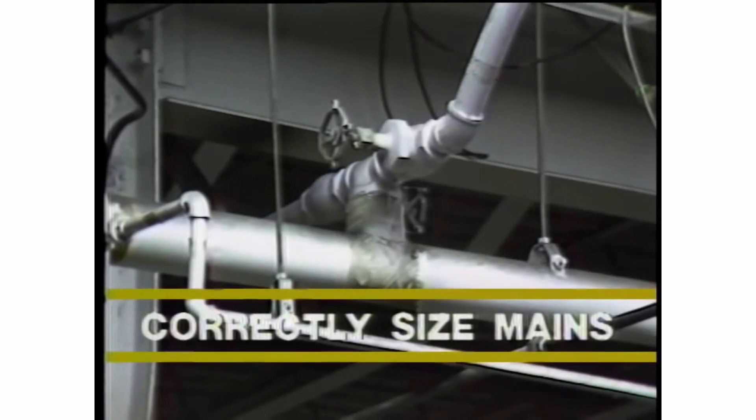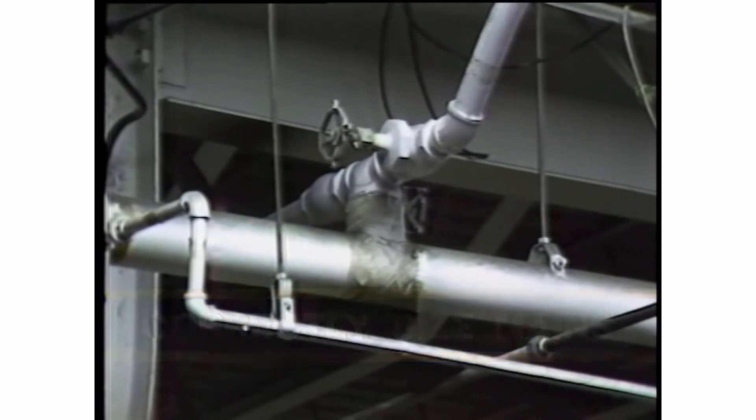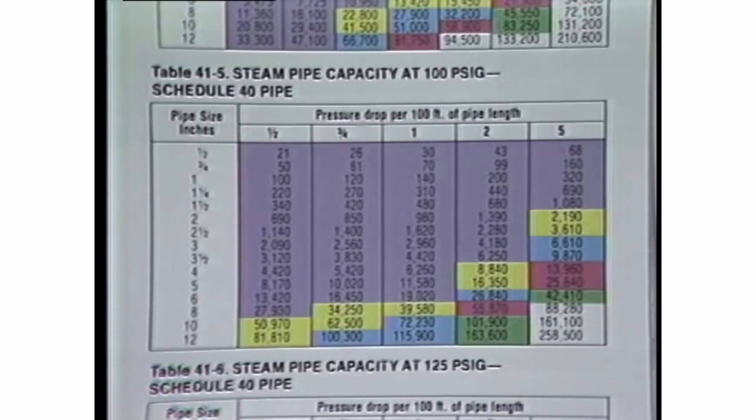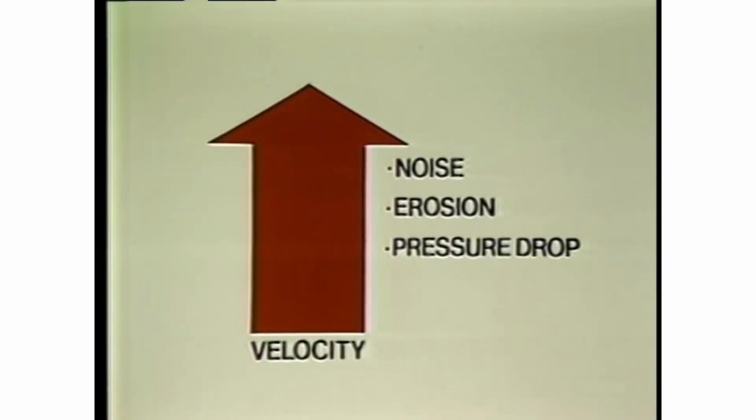Steam mains must be correctly sized to ensure efficient operation and to minimize maintenance costs. The size of the steam main piping is determined by the allowable pressure drop and velocity for a specific pressure. As velocity increases, so do noise levels, erosion potential, and the amount of pressure drop.